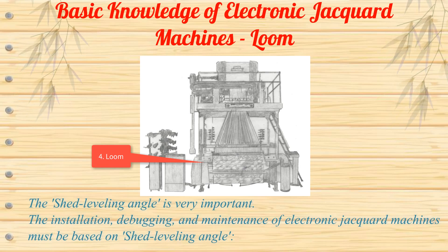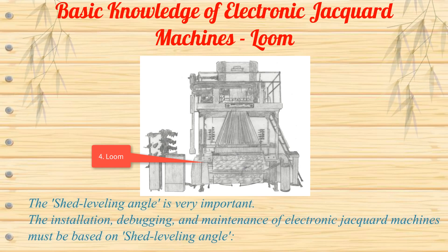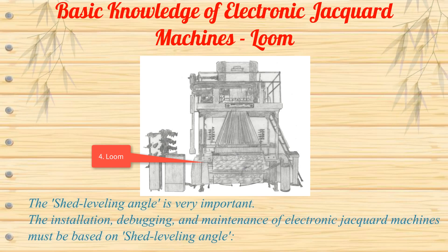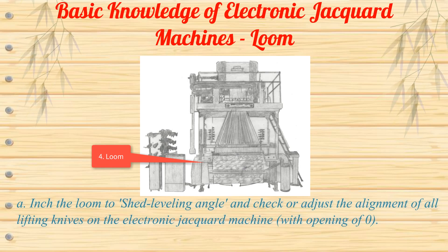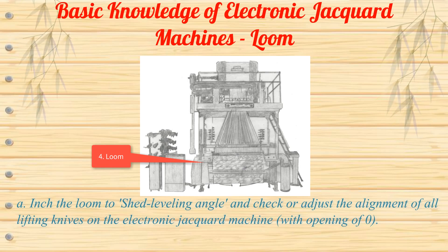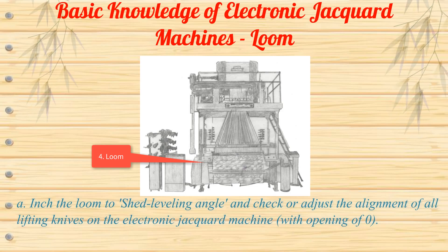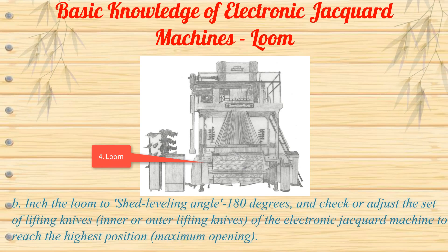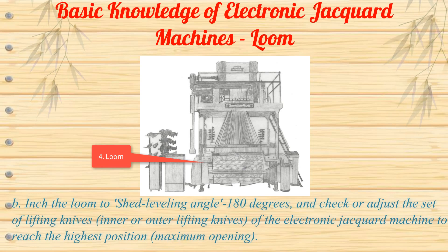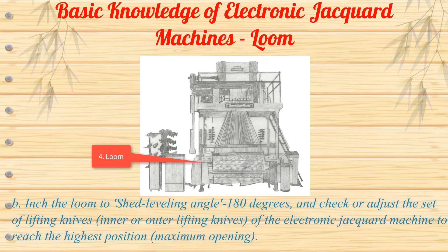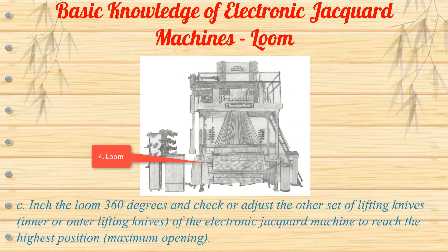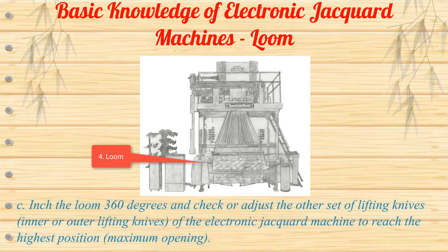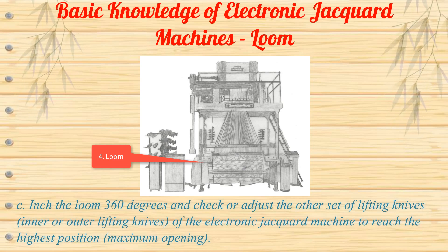The shed leveling angle is very important. The installation, debugging, and maintenance of electronic jacquard machines must be based on the shed leveling angle. A: Inch the loom to shed leveling angle and check or adjust the alignment of all lifting knives on the electronic jacquard machine with an opening of 0. A: Inch the loom to shed leveling angle and check or adjust one set of lifting knives (inner or outer) of the electronic jacquard machine to reach the highest position — maximum opening. A: Inch the loom 360 degrees and check or adjust the other set of lifting knives (inner or outer) of the electronic jacquard machine to reach the highest position — maximum opening.